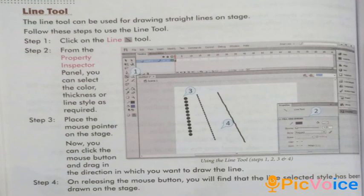The Line Tool: The line tool can be used for drawing straight lines on stage. Follow these steps to use the line tool. Step 1, click on the line tool. Step 2, from the Property Inspector panel you can select the color, thickness, or line style as required. Step 3, place the mouse pointer on the stage, click the mouse button and drag in the direction in which you want to draw the line. Step 4, on releasing the mouse button you will find that the line's selected style has been drawn on the stage.